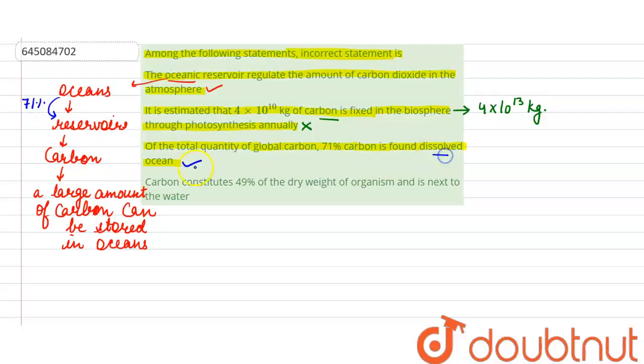Now the last statement is: carbon constitutes 49% of the dry weight of organisms and is next to water. This statement is also correct because carbon is a major compound which is present in an organism in very high amount, that is 49%. So this statement is also true.